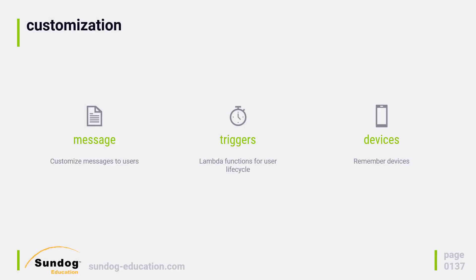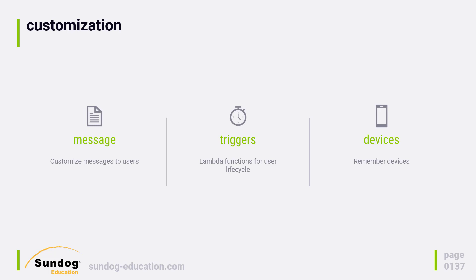Next, we have some more superficial customization options. The most superficial is the messages sent to email addresses for verifications or invitations — you can give the emails your own custom flair so they feel like a part of your app. Next, we have triggers, which are Lambda functions that can be triggered at certain times. AWS is really putting these types of things all over the place so that you can do all sorts of background work. And finally, we have the devices section, which lets you determine whether devices can be remembered by the user pool — really only useful for MFA when you want to allow users to bypass it by remembering their device.